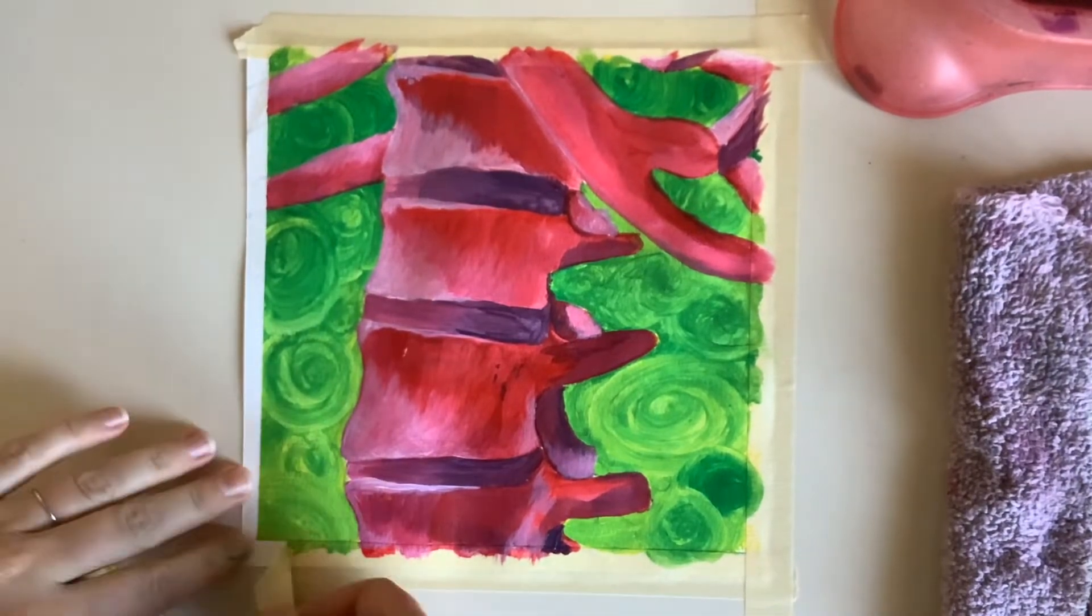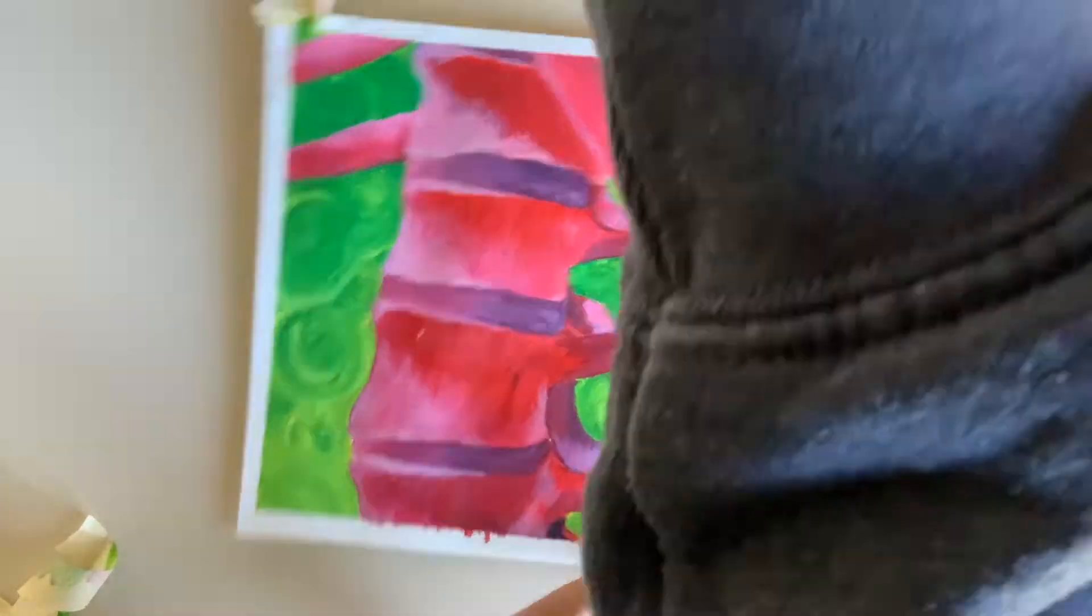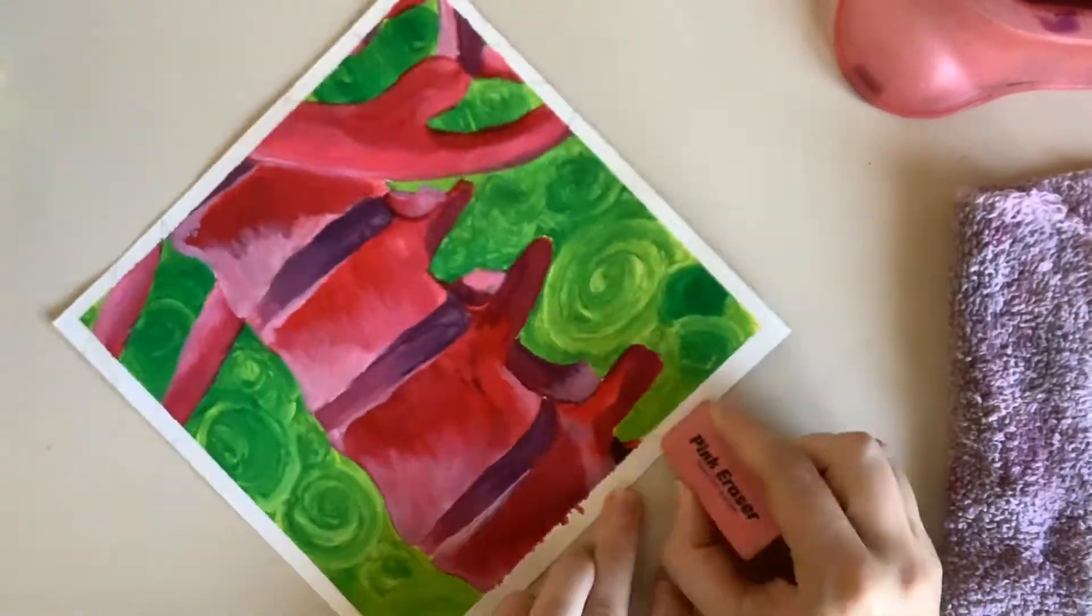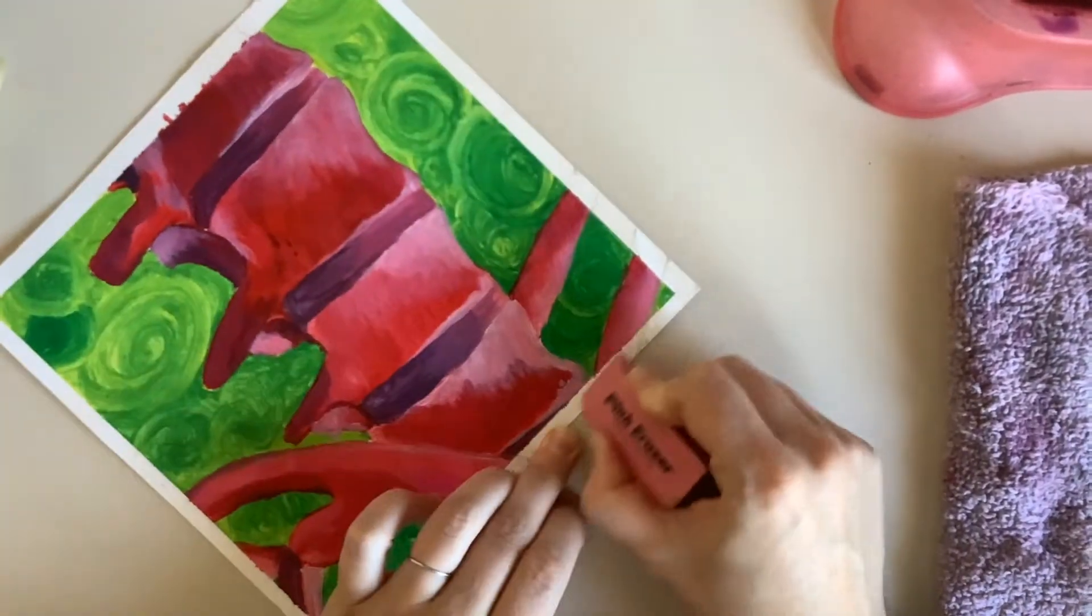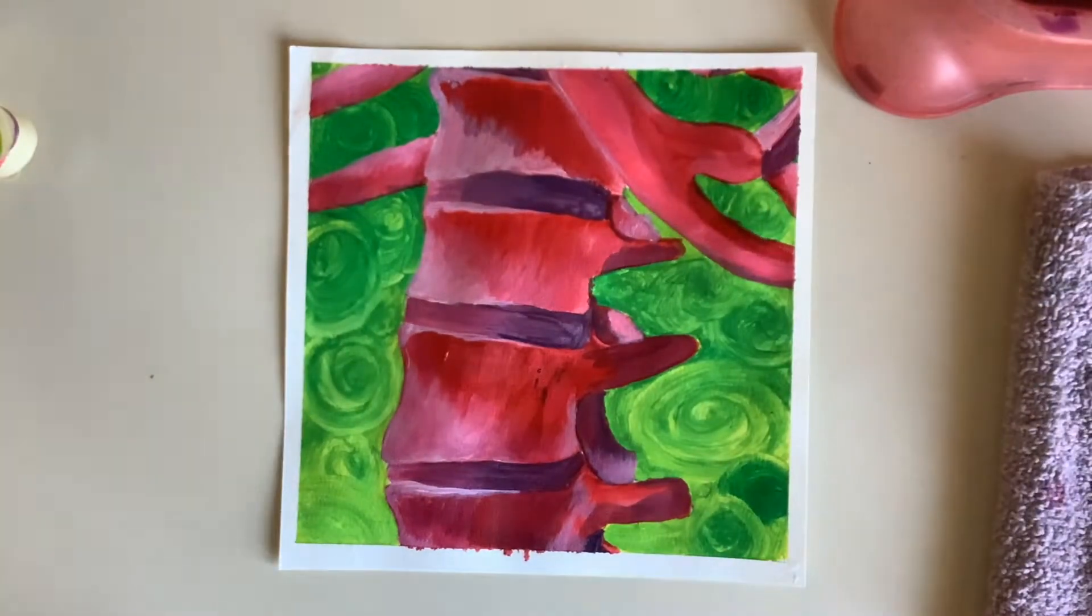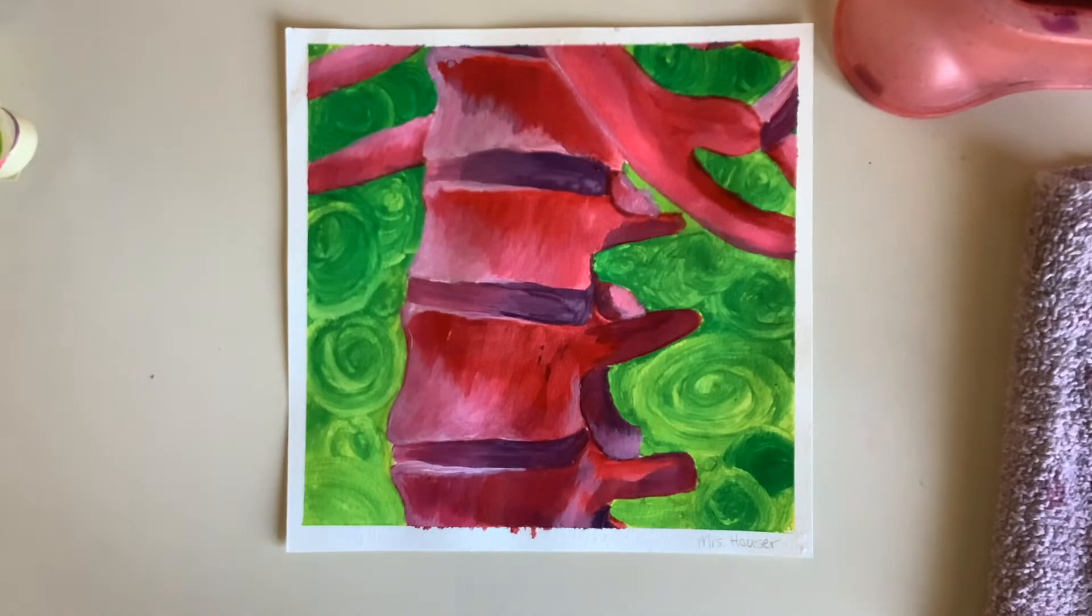When you are completely finished, we're going to take a day to let it dry and then you will peel off the tape. You are going to peel at a 45 degree angle. That way you don't accidentally tear and rip into your painting. Then go back through, erase out any of your extra lines, place it the direction that you want it to hang and write your name in the bottom right hand corner.